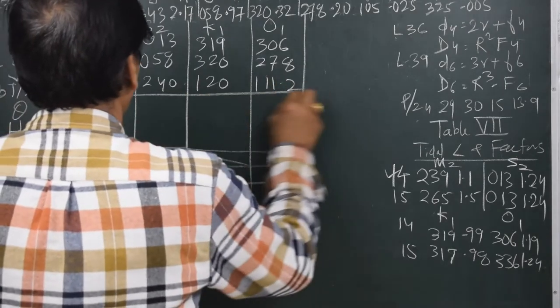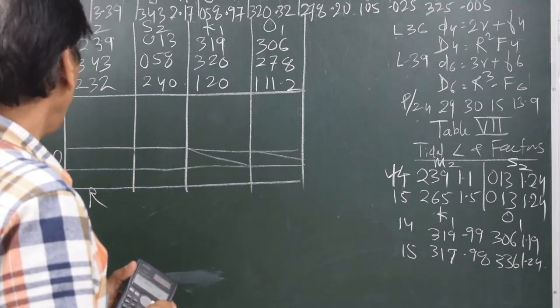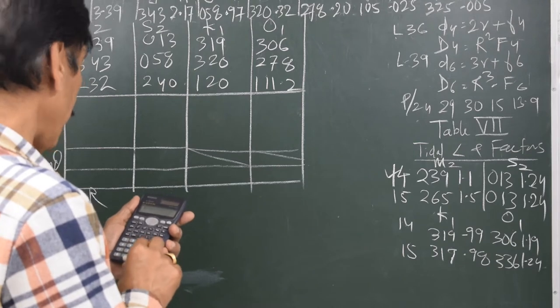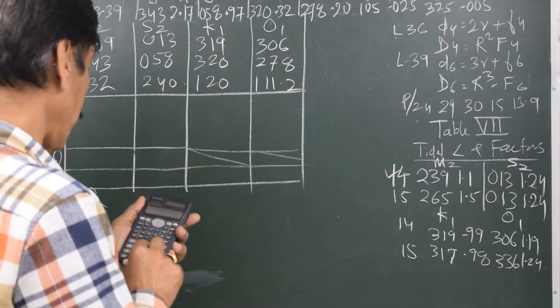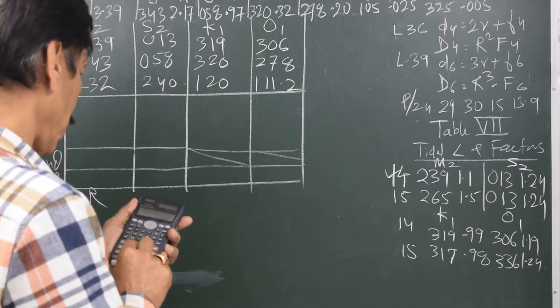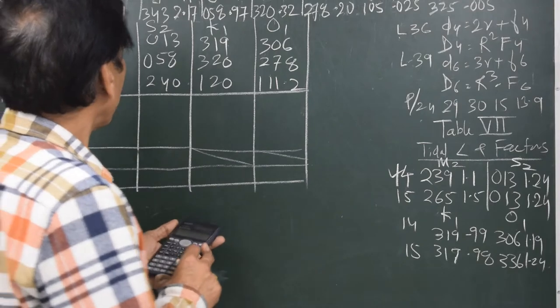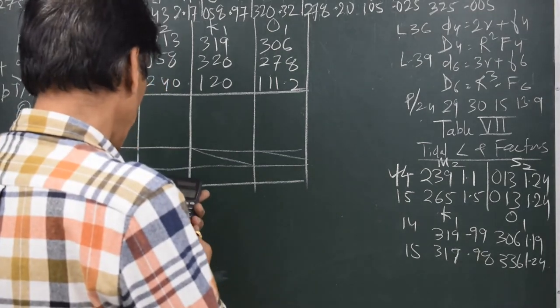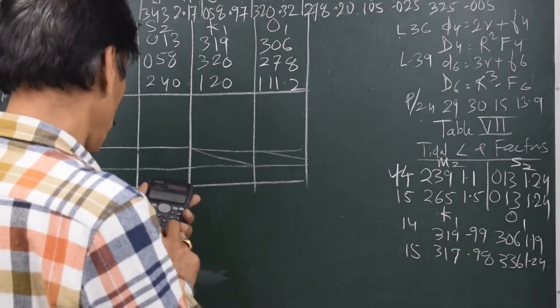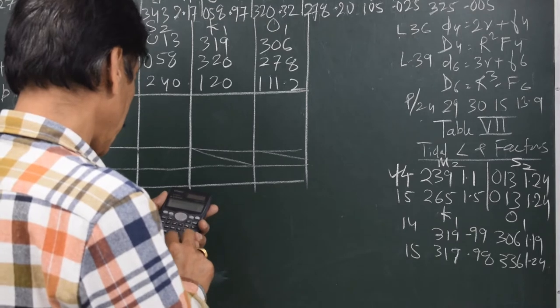For theta I have to add the first two and subtract the third one: A plus G minus P upon 24. So the first is 239 plus 343 minus 232, that makes 350 degrees. So for S2 it is 013 plus 058 minus 240. That becomes negative so I add 360 to it.